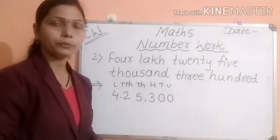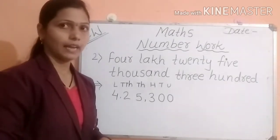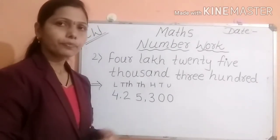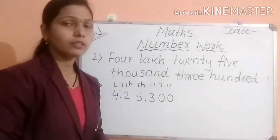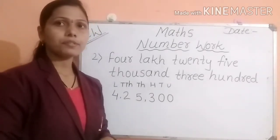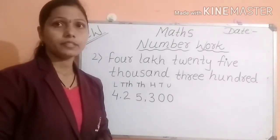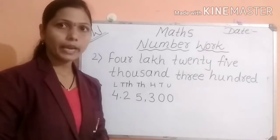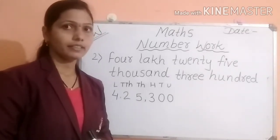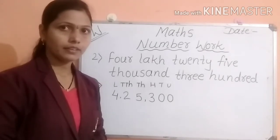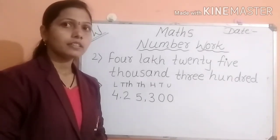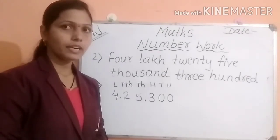So I hope you studied and you did your homework. Let us move forward. Up to this time, we have studied six-digit numbers. Now, if we add one to the six-digit number, then we will get a seven-digit number.